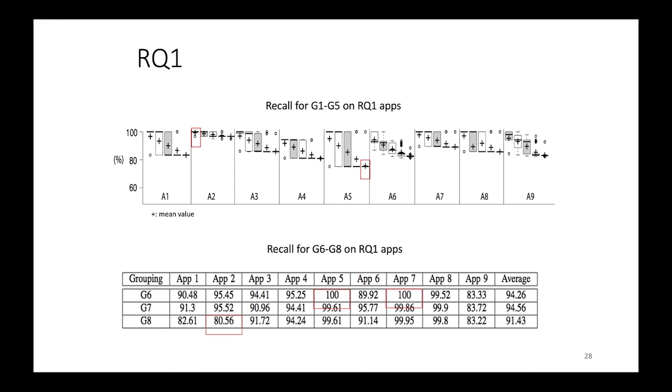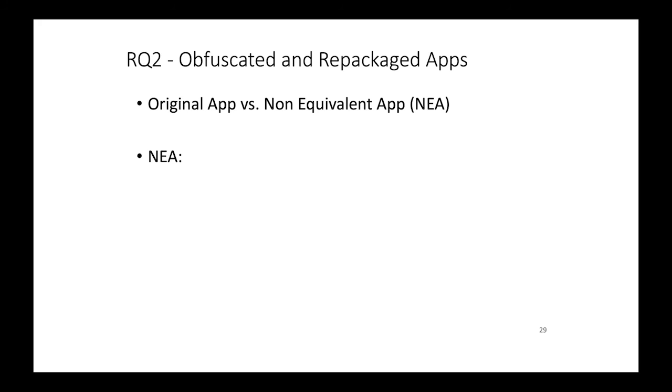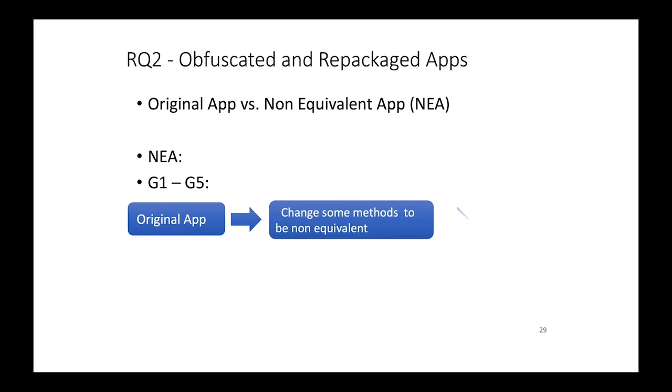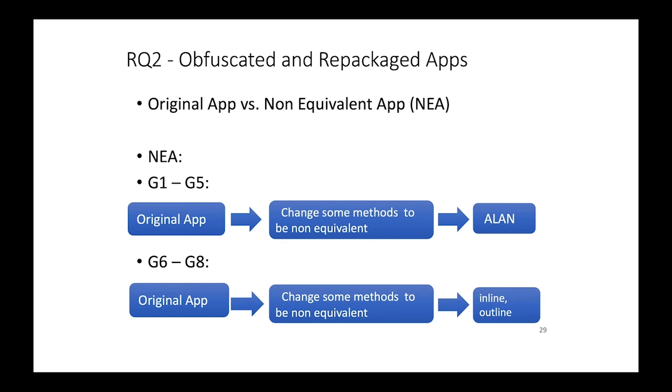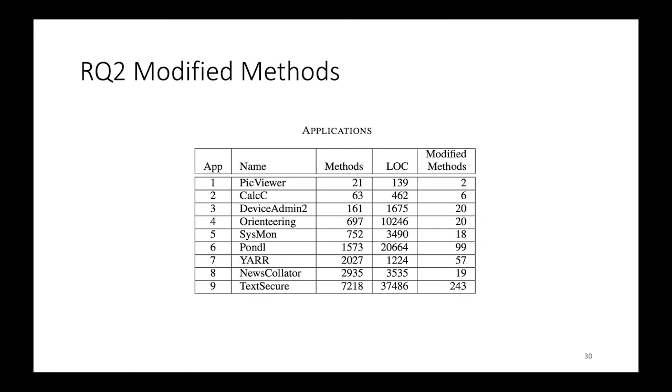For RQ2, what we're doing here is for G1 to G5, we take the original app and modified it, and then send that app to Allen, where we can do group 1 to group 5 obfuscation. For G6 and G8, we take the original app, and then have our undergraduate student modify it, and then he also add the outline, the inlining. The number of modify method range from 2 to 243 across the nine apps that we use.